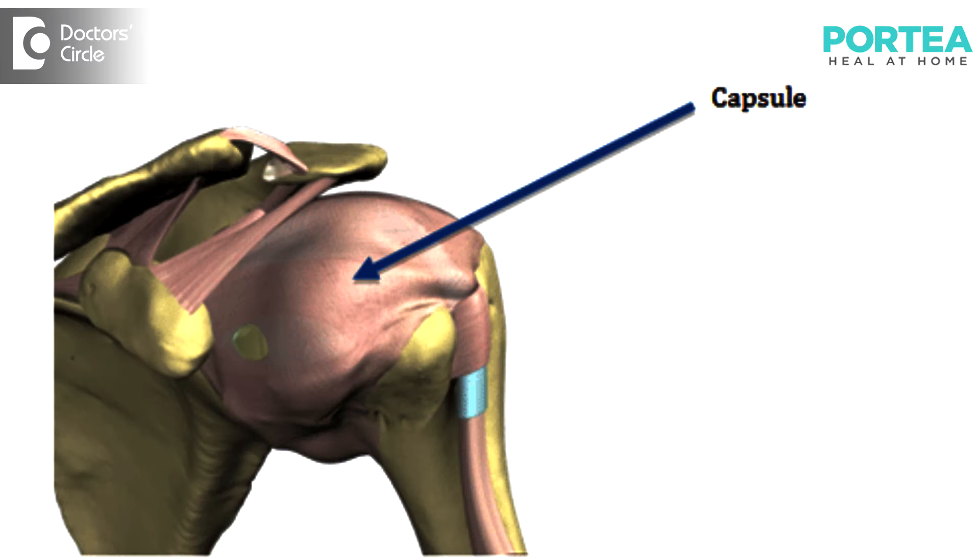Adhesive Capsulitis is a very common disease seen in the elder population — those above 40 years of age. It's seen most in women, and across the condition, we can see that people who are diabetic tend to have Adhesive Capsulitis. Basically, it's an inflammation of the capsule of the shoulder joint. The capsule is a sac formation which holds the shoulder for better free movements. It is seen as primary Adhesive Capsulitis and secondary Adhesive Capsulitis.